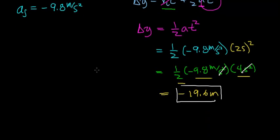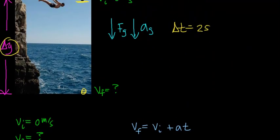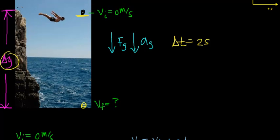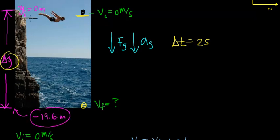Notice the negative sign. The negative sign indicates that the rock has fallen negative 19.6 meters, meaning it is 19.6 meters below the drop point. Looking back at the cliff, we assume this point at the top is y-initial, which equals zero meters, and the point right before it hits the water is negative 19.6 meters. So the cliff is just 19.6 meters below the release point.